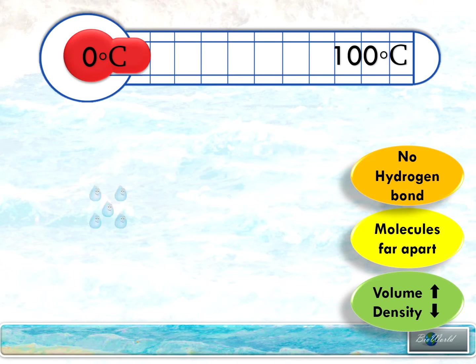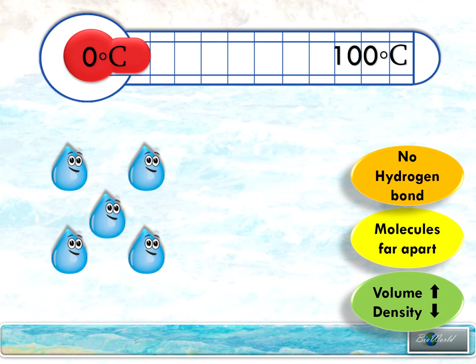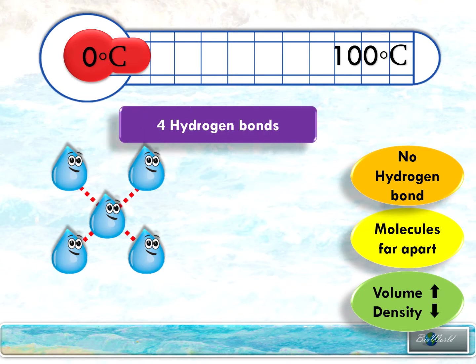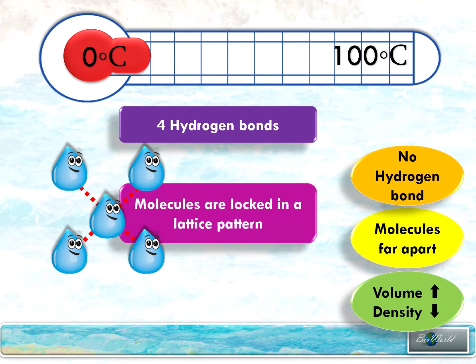At this temperature, water has no kinetic energy - it stays still. So this enables it to form the maximum four hydrogen bonds. Since water molecules are locked by these four hydrogen bonds, they actually form a pattern known as the lattice pattern.